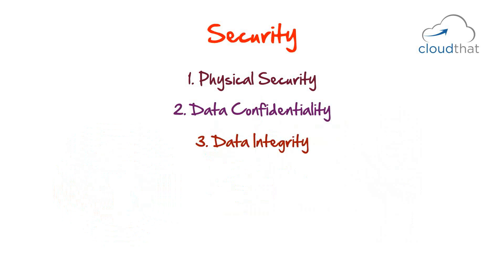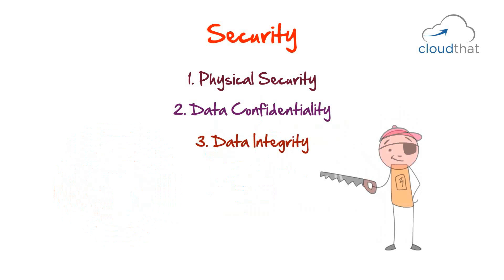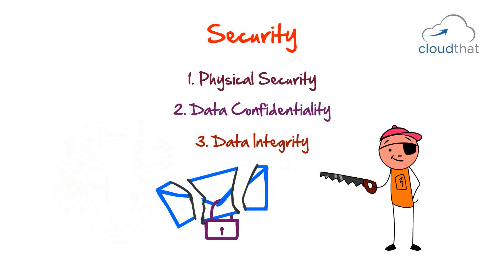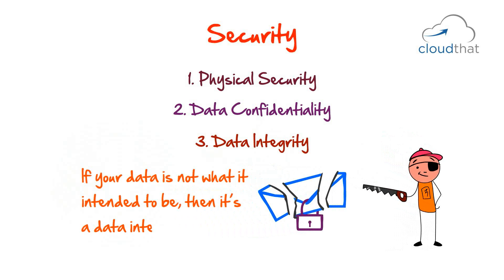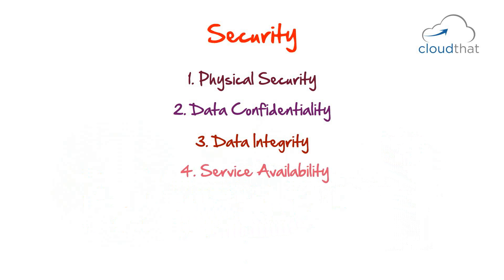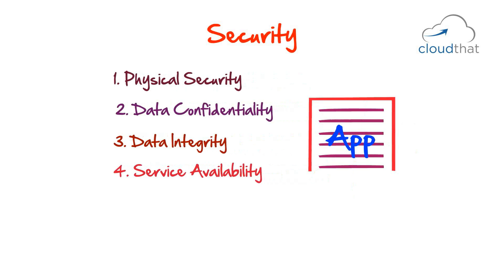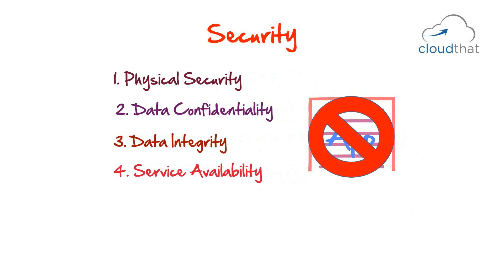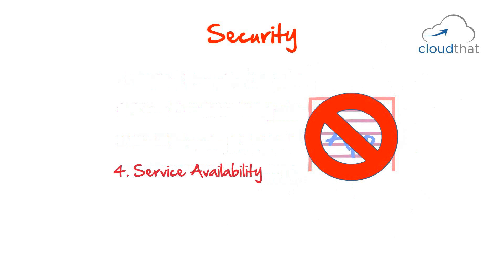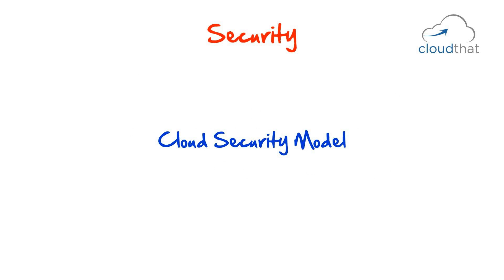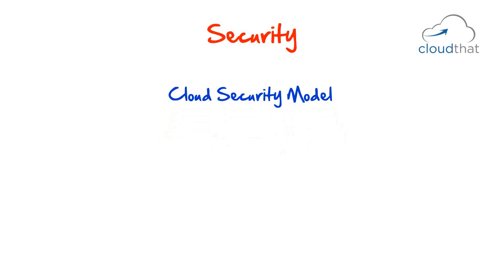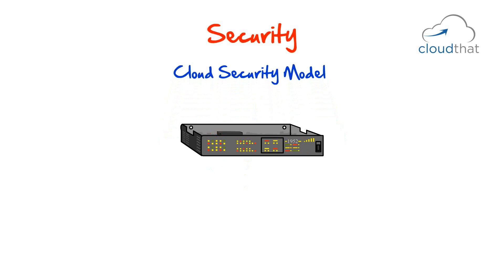Data integrity: a hacker may not be able to read your data but can ruin it so you can't read it either. If your data is not what it was intended to be, that's a data integrity issue. Next is service availability — if someone bombards your application with so many requests that it becomes unavailable, that's a service availability issue.